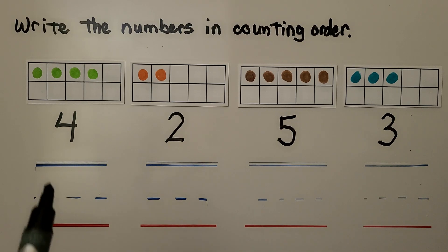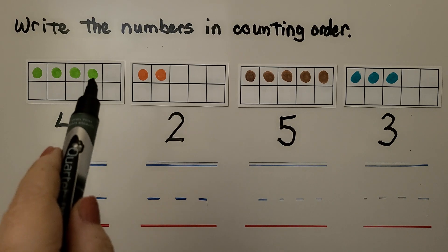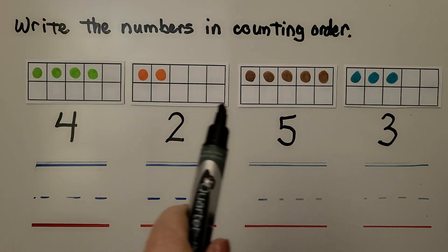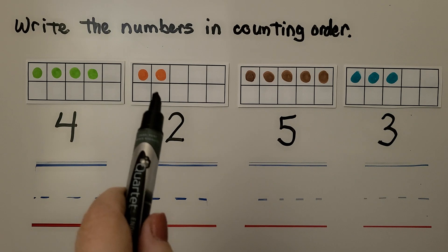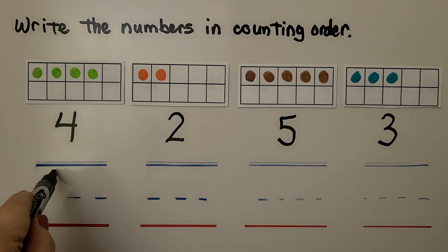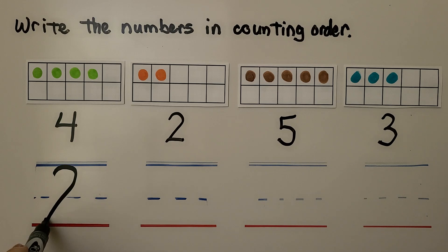Here we have some 10-frames with colored dot counters in them. We need to write the numbers in counting order. We can say the numbers in counting order when we start with the 10-frame that has the fewest dots. Looking at the dots, this one has the fewest — 2. That must be the first number we need to write, as it has the fewest dot counters.